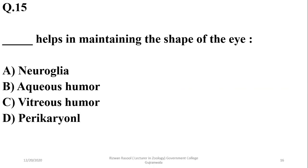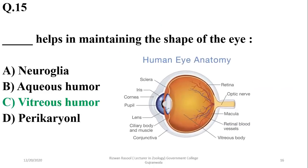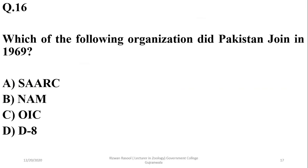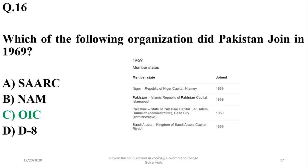Question 15: Vitreous humor helps in maintaining the shape of the eye — it covers most of the volume of the eye and is responsible for maintaining eye shape. Question 16: Pakistan joined the OIC (Organization of Islamic Countries) in 1969; it was established in 1969 and Pakistan has been a member since its establishment. So the answer is C.